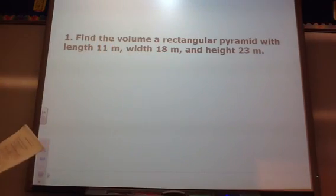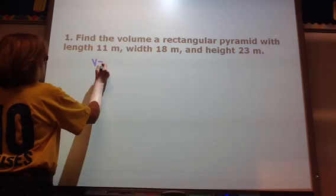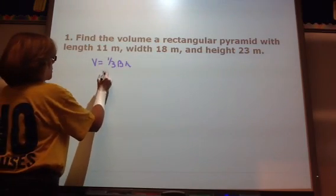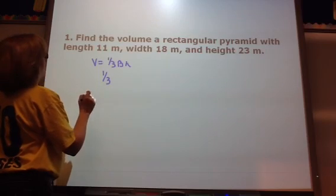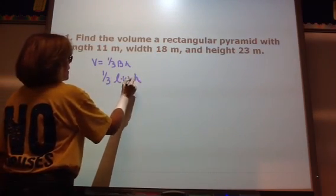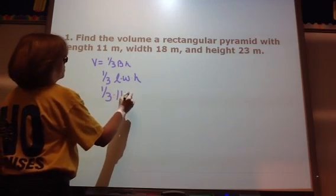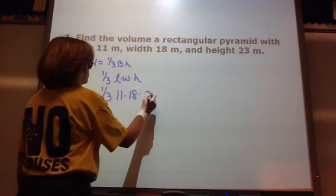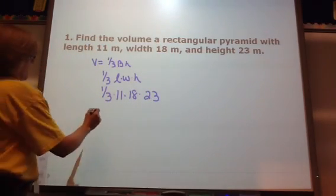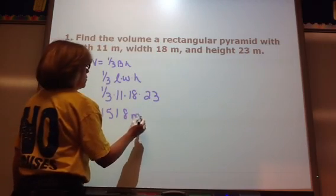We're going to find the volume of a rectangular pyramid with given dimensions. The base is my length and my width, and then the height of that pyramid. So I get 1,518 cubic meters.